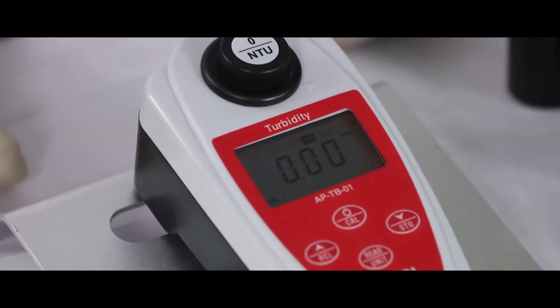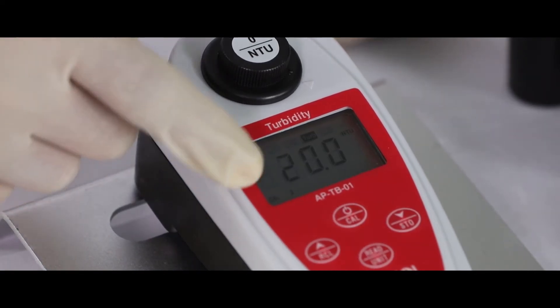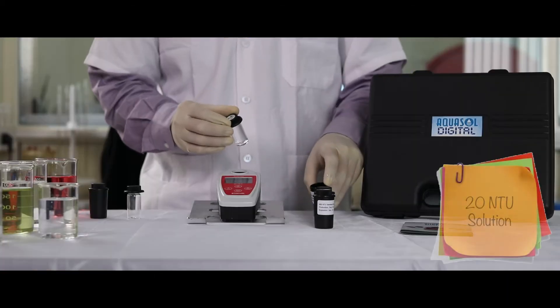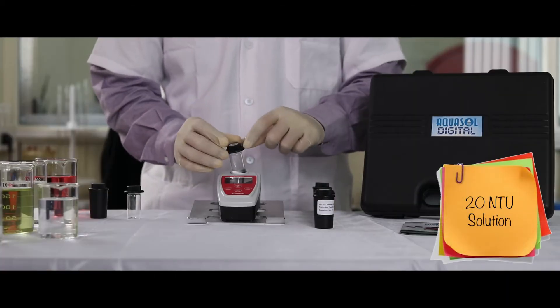The meter will display 20.00 and CAL 2. Replace the 0 NTU bottle with the 20 NTU bottle. Make sure the notch matches all the time.